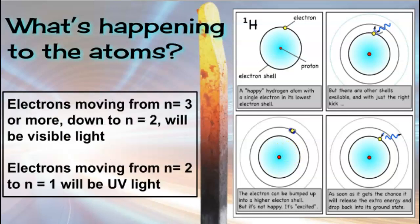Electrons that are moving from n3 or more down to n2 are going to be emitting visible light. But if the electron is only moving from n2 to n1, it's going to be UV light. So you're not going to be able to see that really being released unless you're using a UV light to detect that, like fluorescence of certain types of minerals.